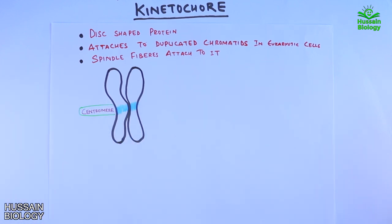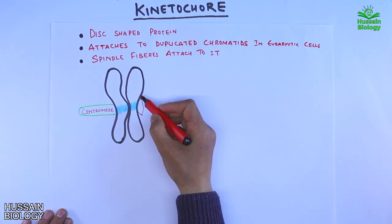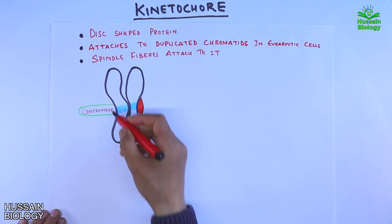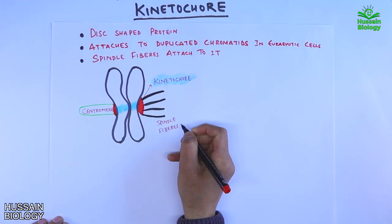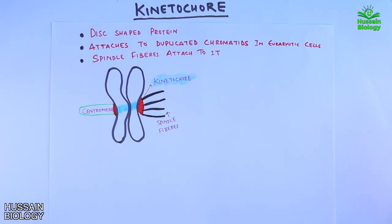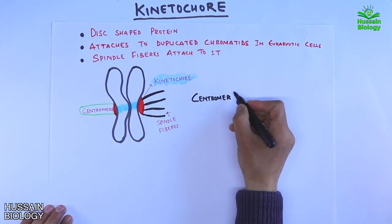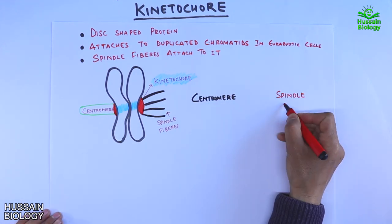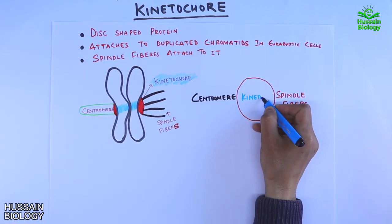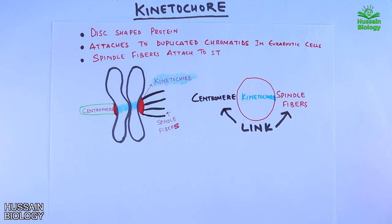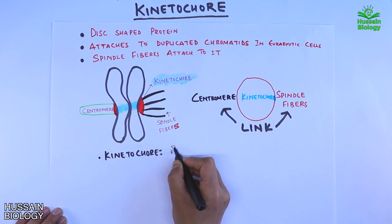The centromere region is highlighted in blue. The kinetochore on these chromatids is shown in red and attaches at the centromere on both chromatids. Spindle fibers attach to these kinetochores. To sum up: the centromere region and spindle fibers are linked together by the kinetochore protein. The kinetochore proteins also regulate the cell cycle.